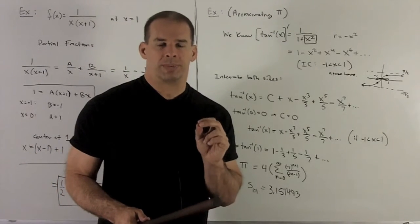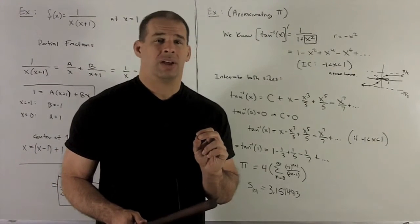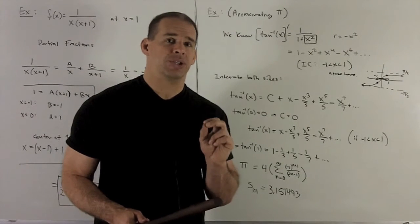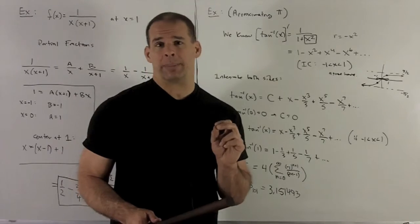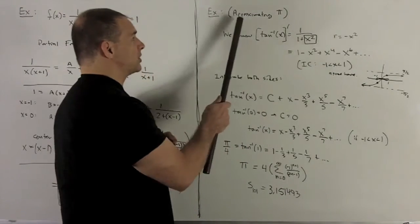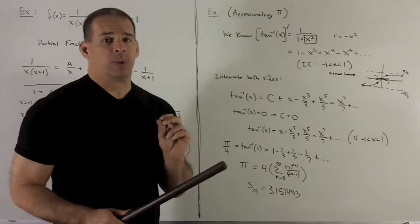So I sold this whole business of series and power series based on the fact that what series will let us do is approximate functions at values. So here's going to be a big one. We're going to approximate pi. So where do we start?